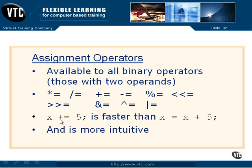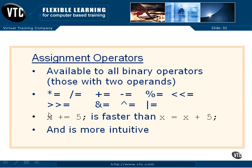Here you can see x plus equals 5. Now we could have written this out as x equals x plus 5, but that's just the long form. This is what we say now in C: x plus equals 5. It means exactly the same thing and exactly the same result will occur — 5 will be added to the existing value in x. But it can be faster because the compiler doesn't have to figure out that it needs to fetch the variable value, add 5 to it, and store the result back into x. It understands that you want to take what is in x, add 5, and put it right back again.